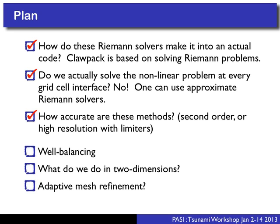Yesterday I said a few things about how Riemann solvers actually make it into a code, in ClawPack in particular. I said some things about approximate Riemann solvers — ClawPack and GeoClaw use essentially a Roe solver, though GeoClaw has modified that approach a bit. I also said a few things about accuracy, specifically high-resolution methods based on using wave limiters. So today I'll cover well-balancing, higher dimensions, and adaptive mesh refinement.